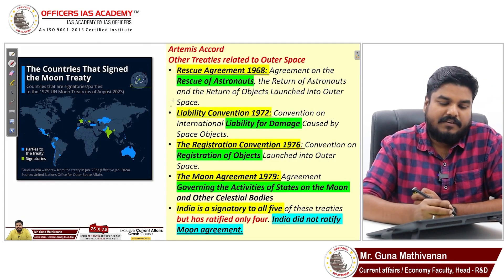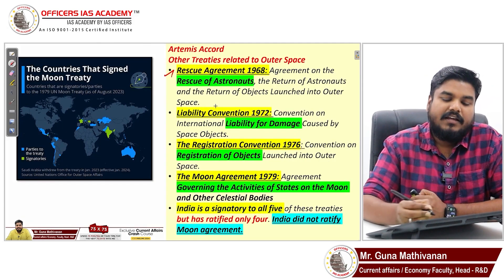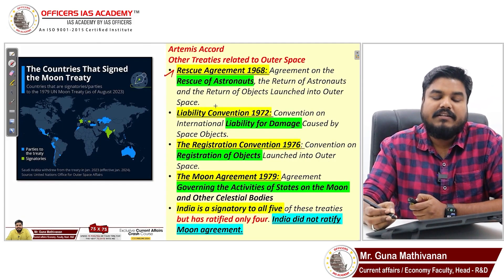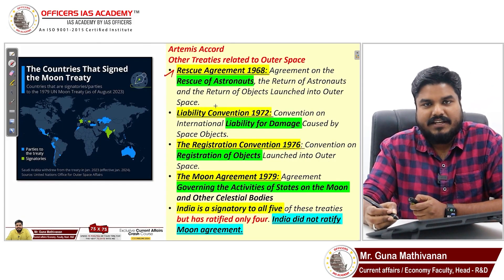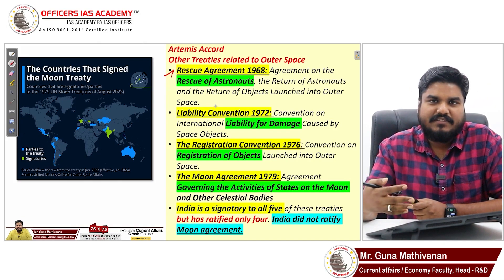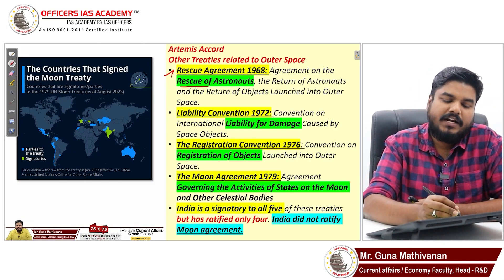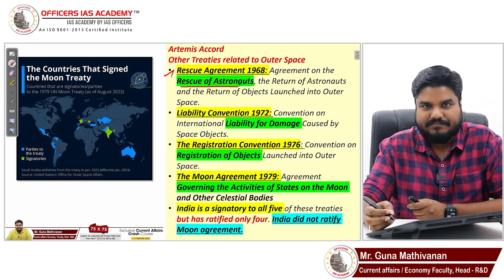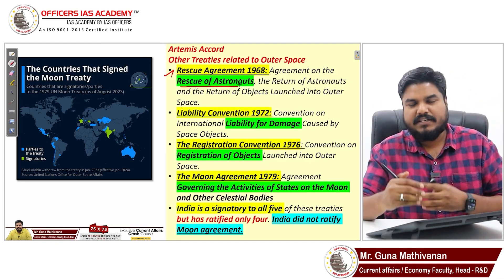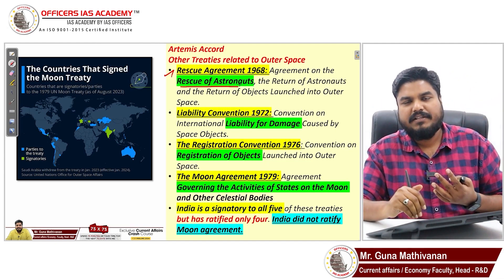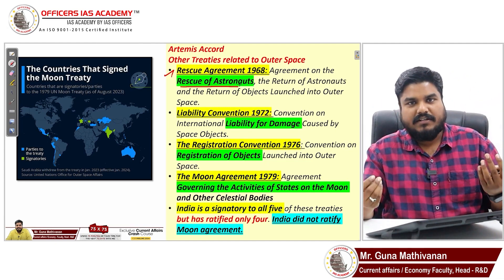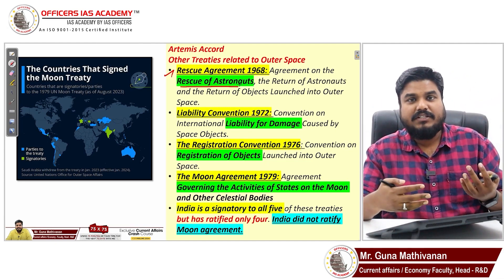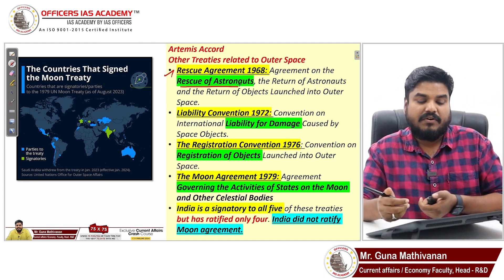The second is the Rescue Agreement of 1968. Countries which have signed this agreement cooperate in the rescue of astronauts in outer space. If any accident happens in outer space, other countries also come forward to rescue the astronauts.